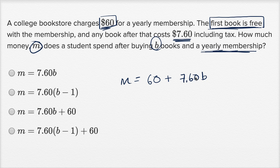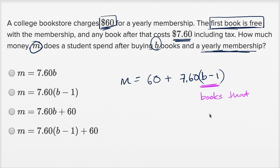So you're only going to pay for one less than the number of books you buy. So instead of $7.60 being times the number of books, it'd be $7.60 times one less than the number of books you buy. One way to think about it is this B minus one, you could think of this as books that are not free.